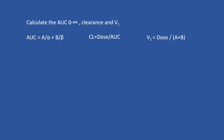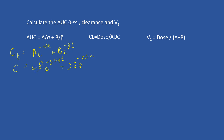To solve the AUC, you need A, alpha, B, and beta. Remember the format: Ct equals A times e to the power of negative alpha·t plus B times e to the power of negative beta·t. Comparing to the information given — 4.8·e^(−0.24t) plus 2.2·e^(−0.1t) — A is 4.8, alpha is 0.24, B is 2.2, and beta is 0.1.